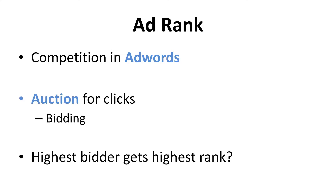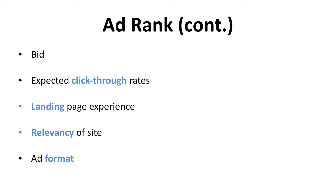Now, you may be asking how to get a higher rank. Google does not look at the bid as the only factor to decide the placement of your ad. Google wants to show only pertaining sites in their search engine and avoid advertisers simply buying the ad space with irrelevant ads. The calculation of AdRank is the combination of your bid, expected click-through rates, landing page experience, relevancy of site, and ad format. You already have a clear idea on the relevancy of bidding, so now I will explain the rest of the factors.